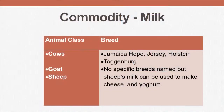These animals also provide us with certain commodities — for example, milk, eggs, and meat. These are the classes of animals and breeds that provide us with milk. We have our dairy cows, for example the Jamaica Hope, or goats — we have the Toggenburg. And for sheep, we do not have a specific name of the breeds used for milk, but the milk from sheep is used mainly for cheese and yogurt.